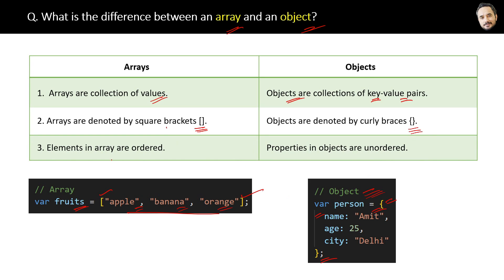The third difference is that elements in an array are ordered. What that means is arrays are indexed, zero one two three in sequence, whereas properties in objects are not ordered. Now you know and understand the differences between the array and the object.